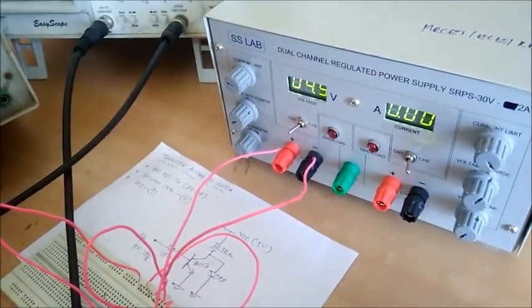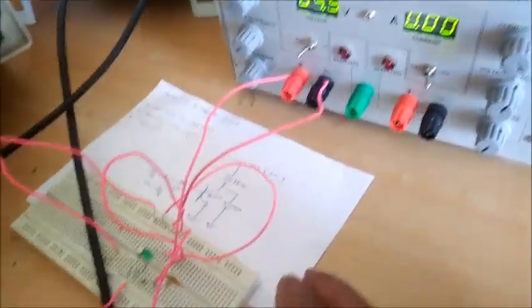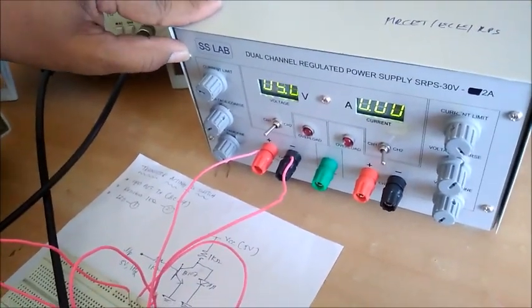For the VCC input, we're going to give 5 volts which we are using as a biasing voltage.